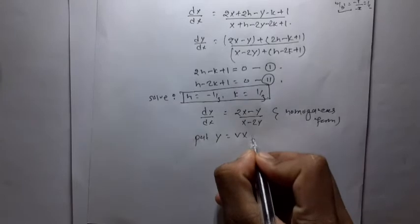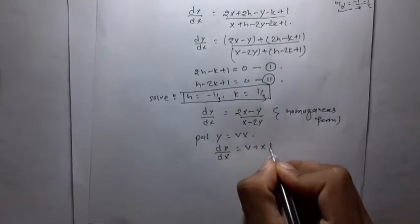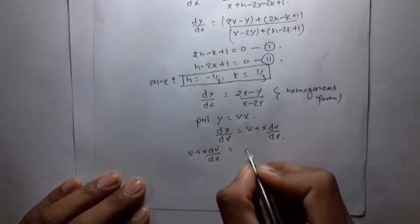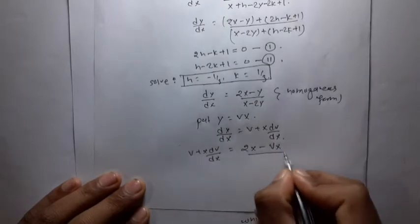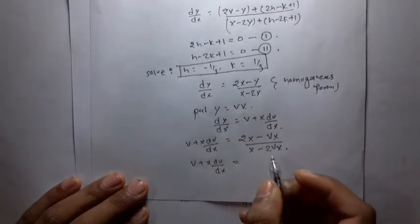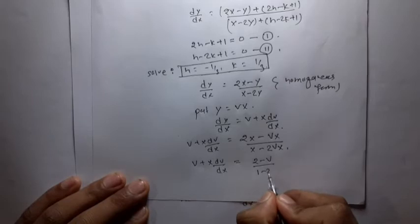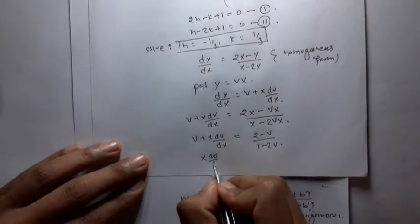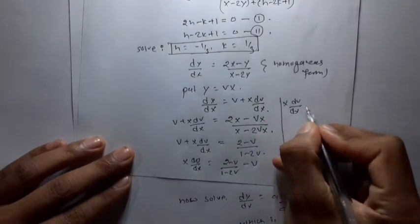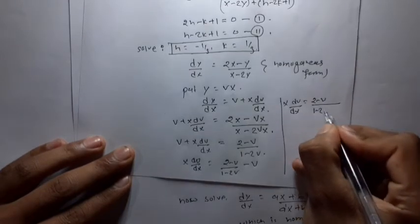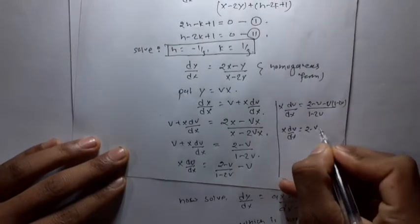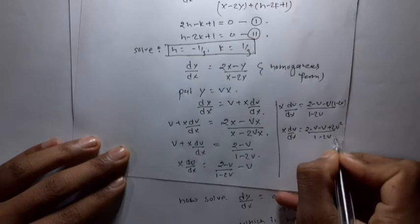For the homogeneous form, we put Y = vX, so dY/dX = v + X·dv/dX. Substituting: v + X·dv/dX = (2X - vX)/(X - 2vX) = (2 - v)/(1 - 2v). Then X·dv/dX = (2 - v)/(1 - 2v) - v = (2 - v - v + 2v²)/(1 - 2v) = (2 - 2v + 2v²)/(1 - 2v).